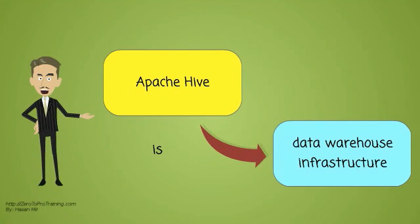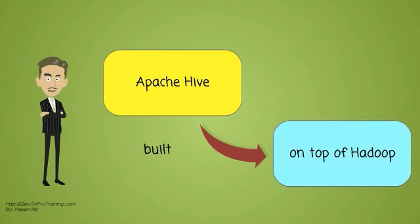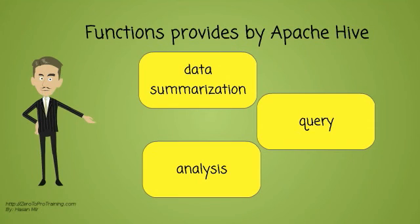Apache Hive is a data warehouse infrastructure built on top of Hadoop. The purpose is to provide the following functions: data summarization, query, and analysis.